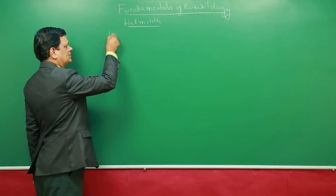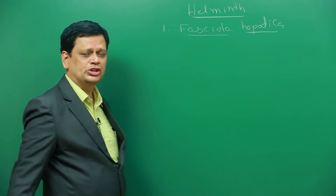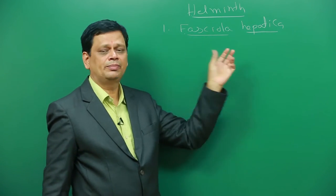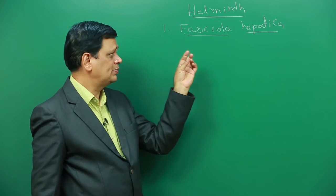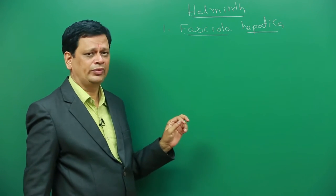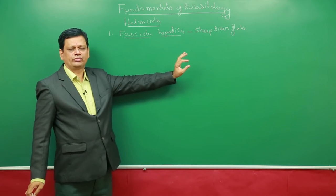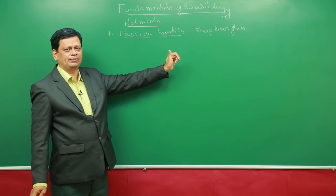So, there is a parasite by name Fasciola hepatica. Fasciola hepatica is a parasite. It is belonging to trematoda and commonly called sheep liver fluke. One of the commonly studied examples here.